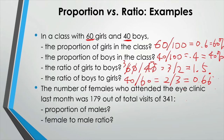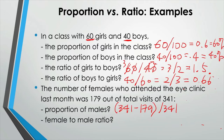Here's another question. The number of females who attended the eye clinic last month was 179 out of total visits of 341. What is the proportion of males? Because the male count is not provided, we have to calculate it from what we have. The numerator is the male count, which is 341 minus 179, divided by 341. So the numerator becomes 162 over 341.